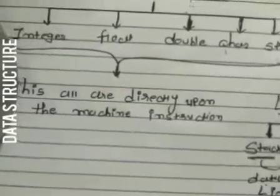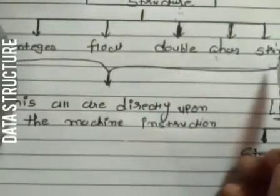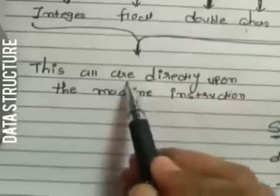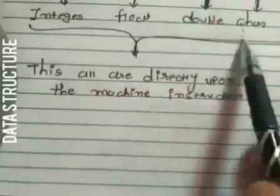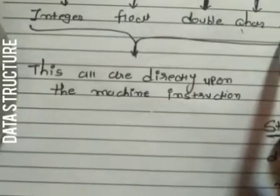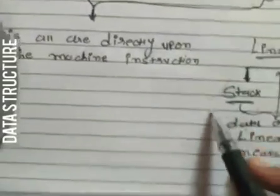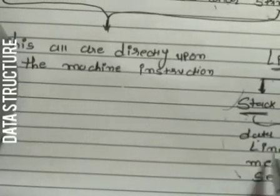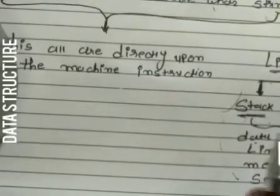Integer, float, double, character, and string — these all work directly on machine instructions, meaning these are all primitive data types that operate as machine instructions. But the complex types such as array, list, and file do not allow machine instruction directly.